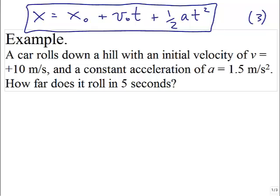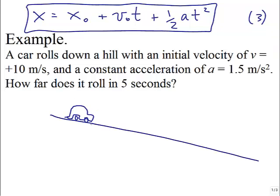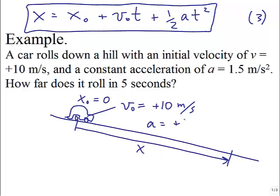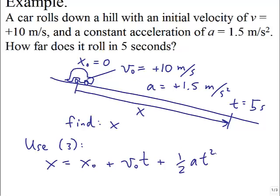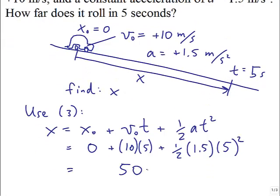Example using equation 3: A car rolls down a hill with initial velocity v equals +10 m/s and constant acceleration a equals 1.5 m/s². How far does it roll in 5 seconds? Setting x-sub-0 equals 0 and using equation 3: x equals 0 plus 10 times 5 plus one-half times 1.5 times 5 squared. That's 50 plus 18.75, giving x equals 69 meters.